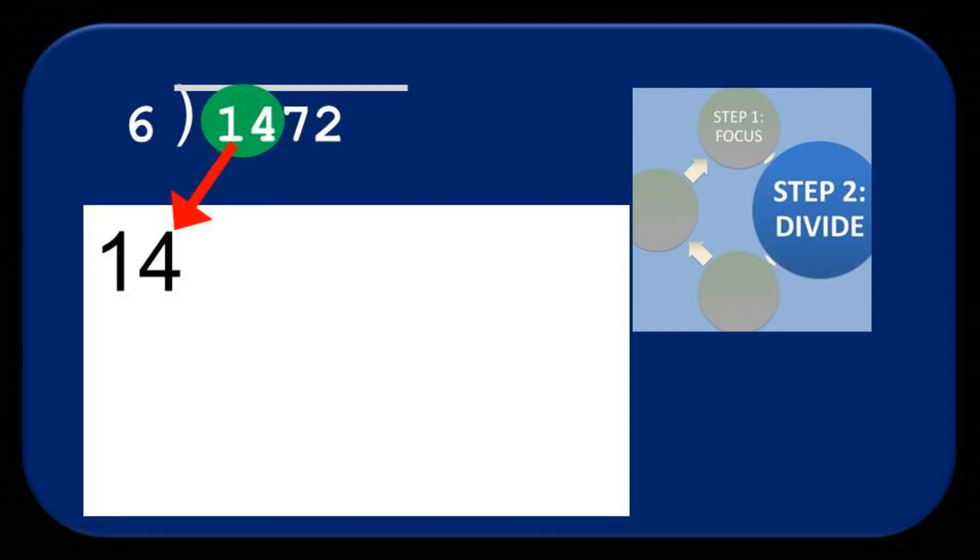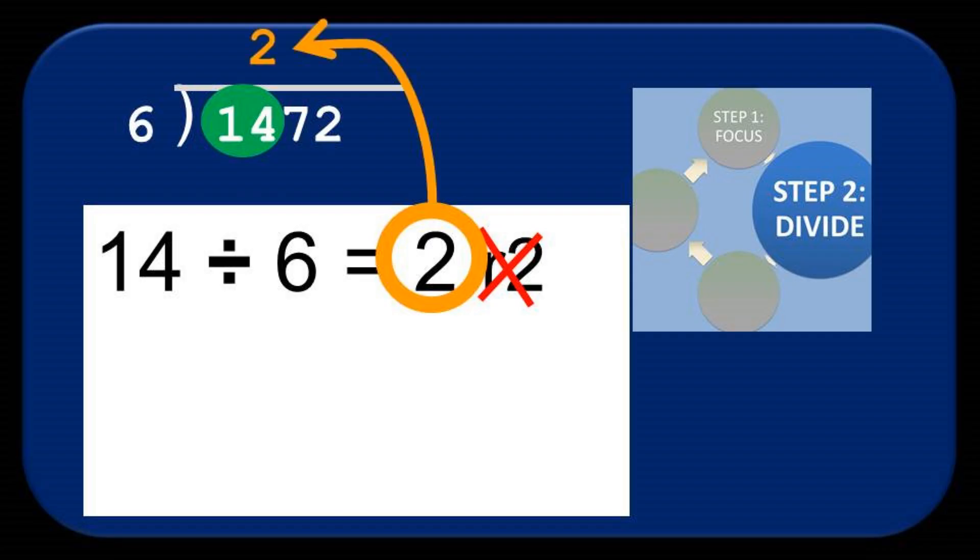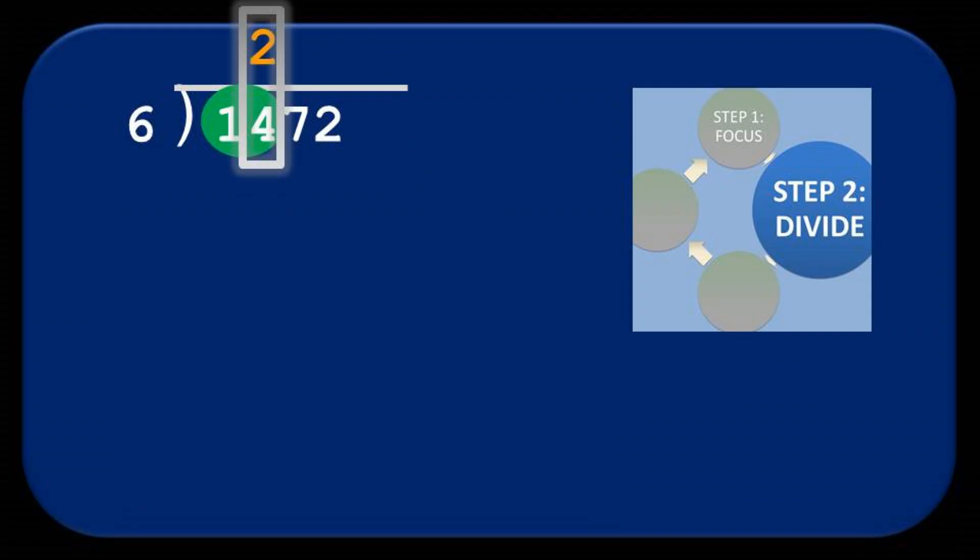Now we take the focus and divide it by the divisor. 14 divided by 6 equals 2. And for now, we ignore the remainder. That 2 is the first part of our answer, and we write it on top of the rooftop, lined up carefully, directly above our focus.